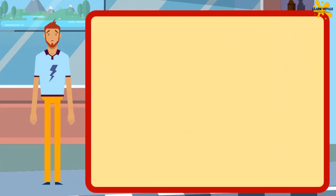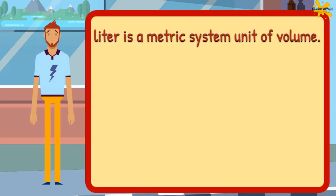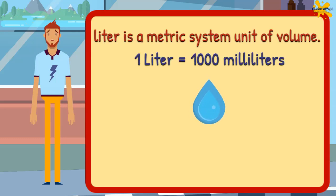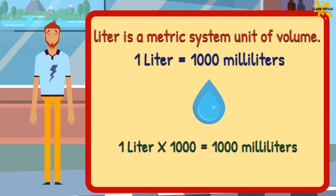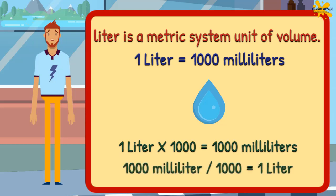Did you know? The liter is a metric system unit of volume. One liter is equal to 1,000 milliliters. So, if you multiply a value in liters by 1,000, you get the value in milliliters. And if you divide a value in milliliters by 1,000, you get the value in liters.